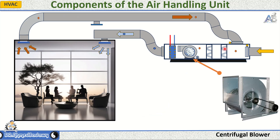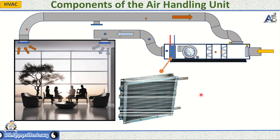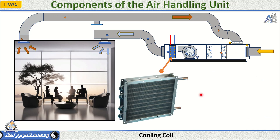4. Fans/Blowers: Used to move air through the AHU and the associated ductwork. Fans can be of different types such as centrifugal or axial, depending on the application and design requirements.